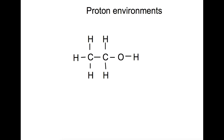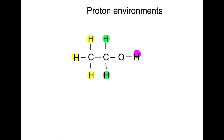Let's have a look at proton environments. Here's a molecule of ethanol and we're going to look at how many different proton environments are present. Starting at the left-hand side, we have three hydrogen atoms all attached to this carbon here. These hydrogens are all identical. The ones next door are slightly different because of what they're attached to on either side, and then this one here is different again. So the ethanol molecule has three proton environments.